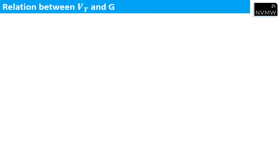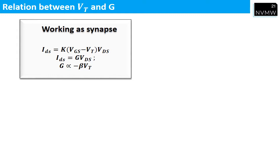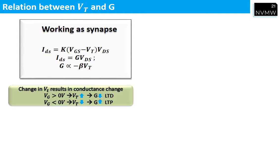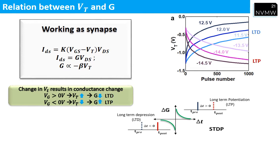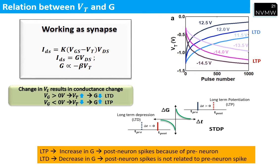What is the relation between VT and conductance G? The drain current ID of the transistor, for a particular VDS and VGS, is proportional to G, which is inversely proportional to VT. As gate bias is positive, VT increases and G decreases — this is LTD. As gate bias is negative, VT decreases and G increases — this is LTP, as explained in the introduction.